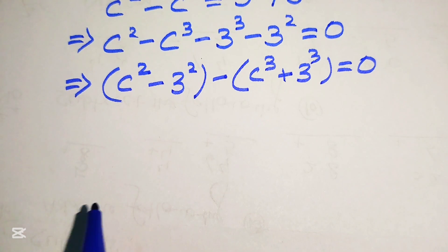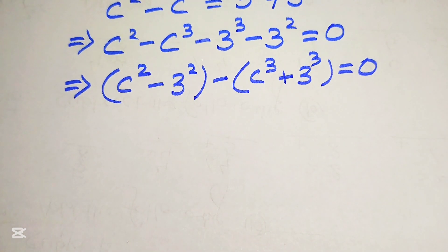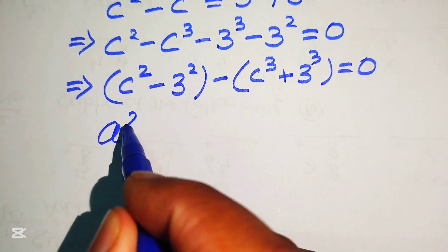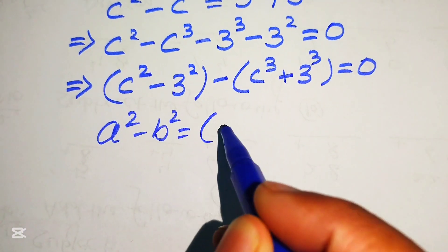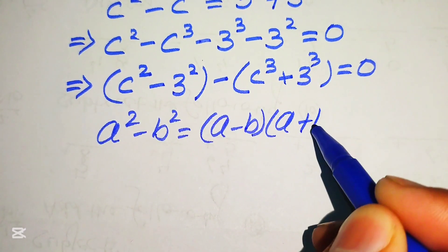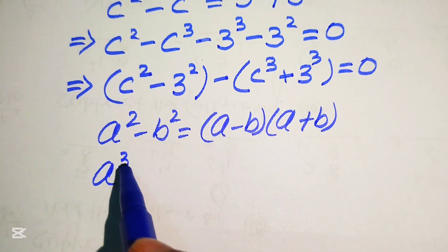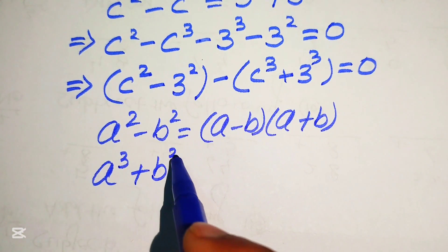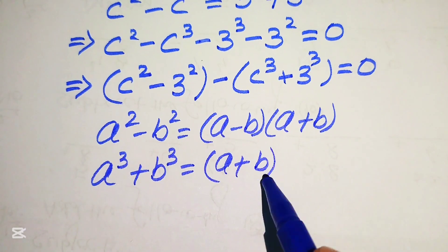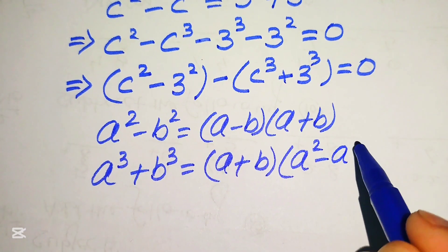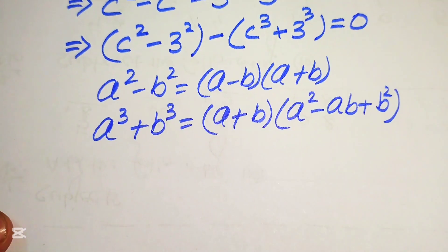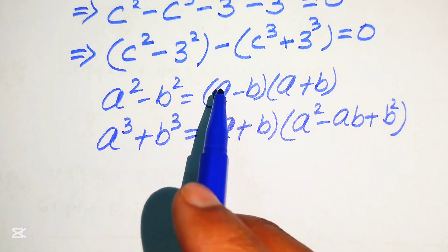In the next step we need two formulas to solve this equation further. First, the difference of squares: a squared minus b squared equals (a minus b)(a plus b). Second, the sum of cubes formula: a cubed plus b cubed equals (a plus b)(a squared minus ab plus b squared).